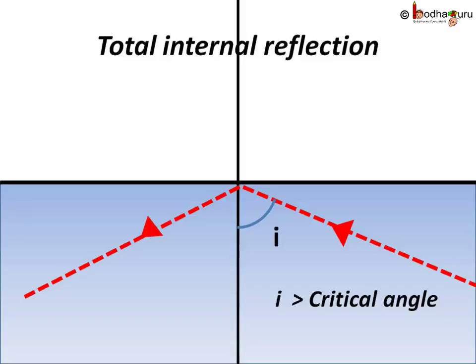If i increases further, r is supposed to increase further. What does it mean? The light will not enter the second medium. Means the light will be reflected back to the same medium. That is the light is not refracted but instead reflected. This event is called total internal reflection.